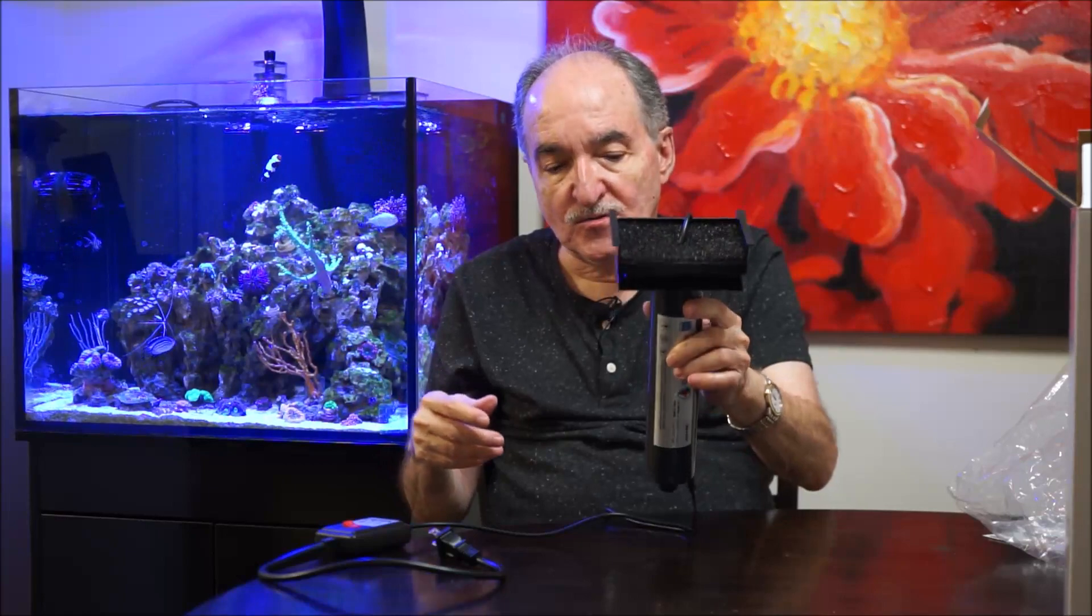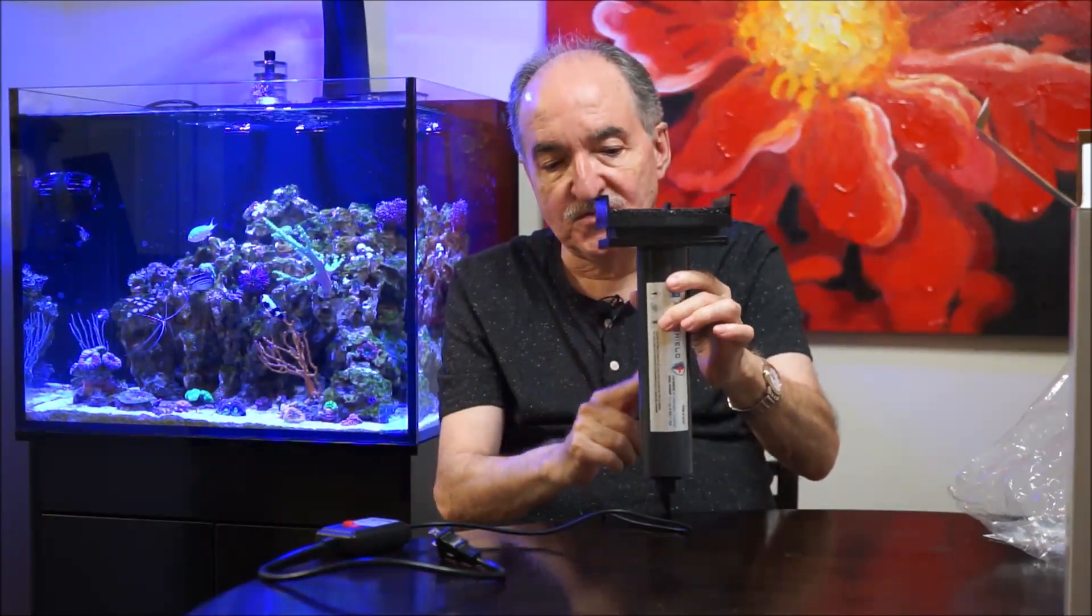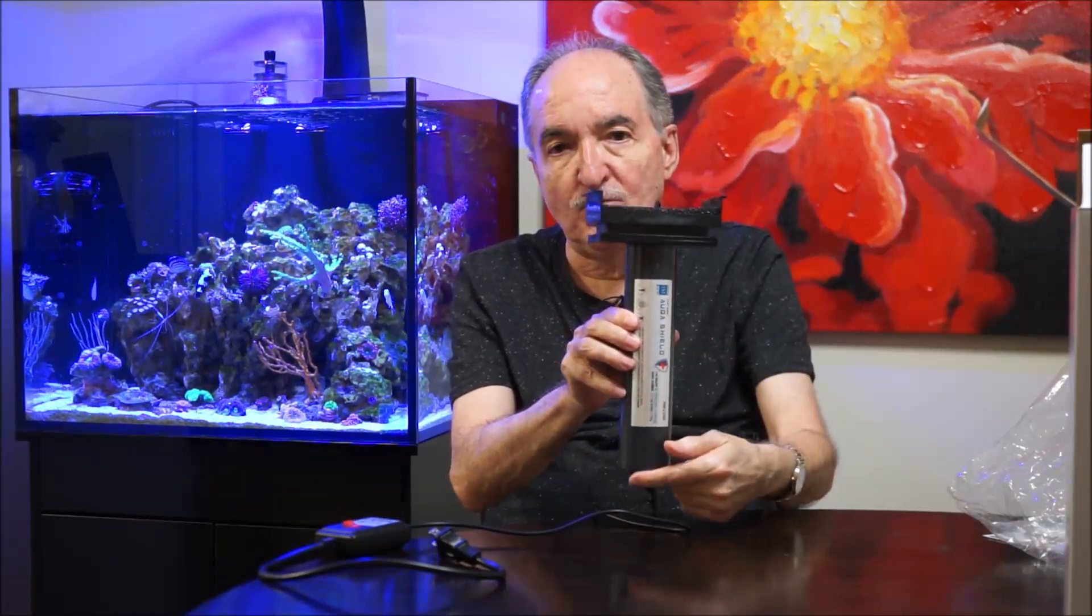And then here, if you notice, there's a sponge. This sponge will actually trap any detritus or anything that goes into it while the water is going into the cylinder where the actual bulb is in the middle.